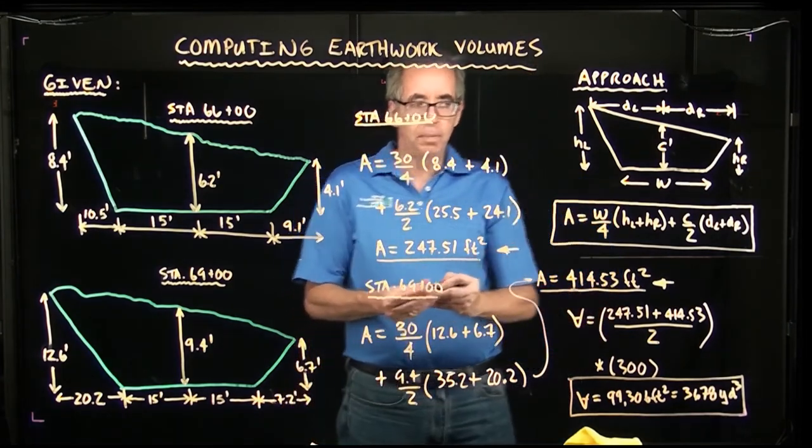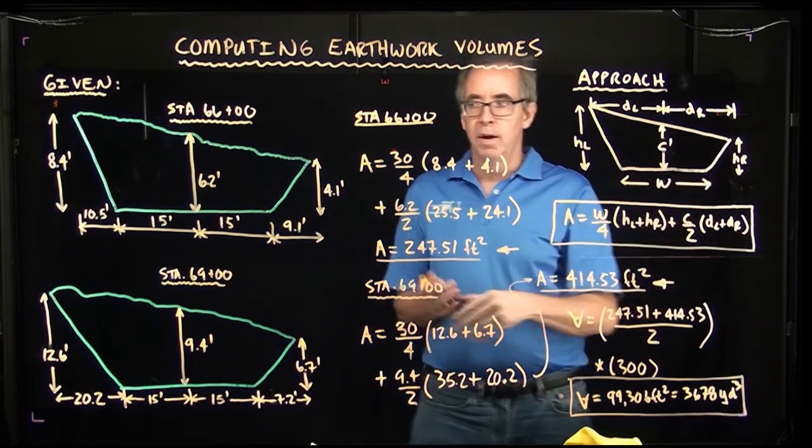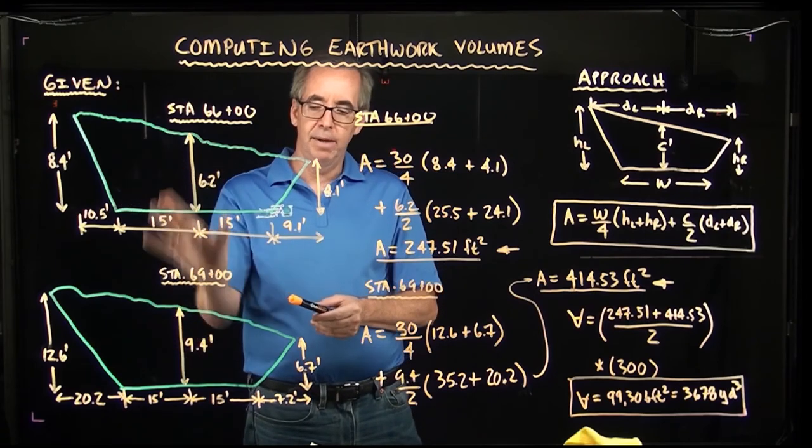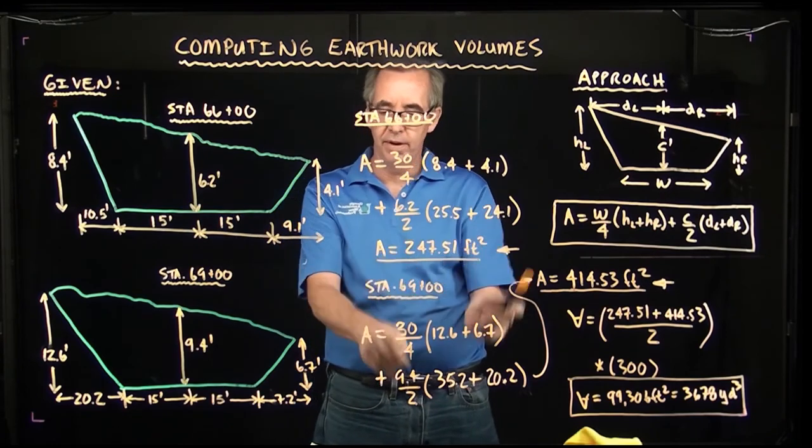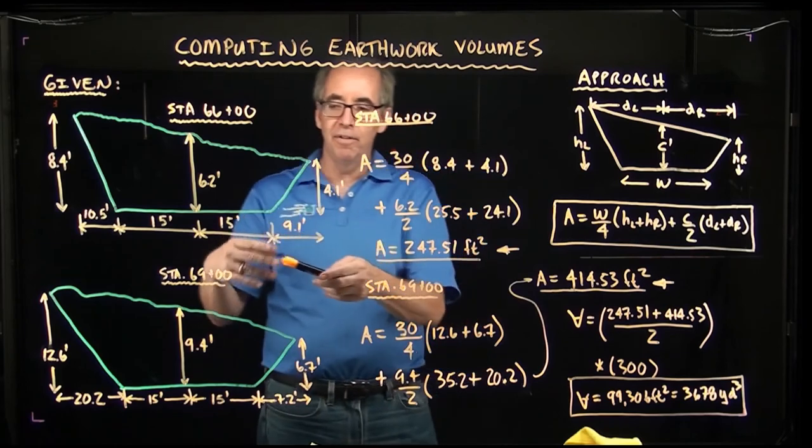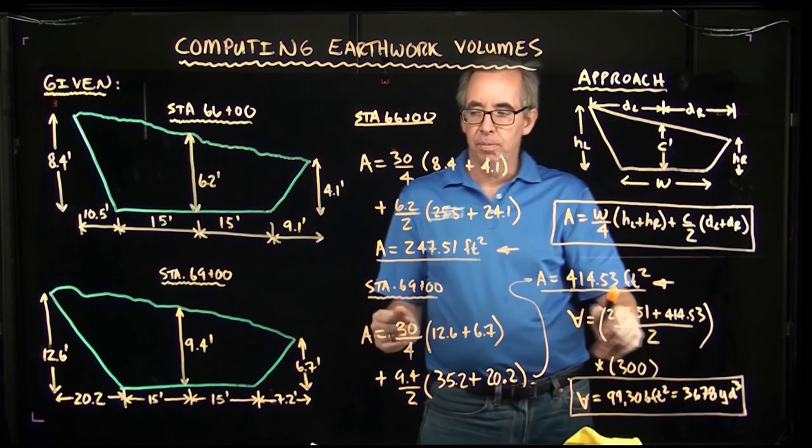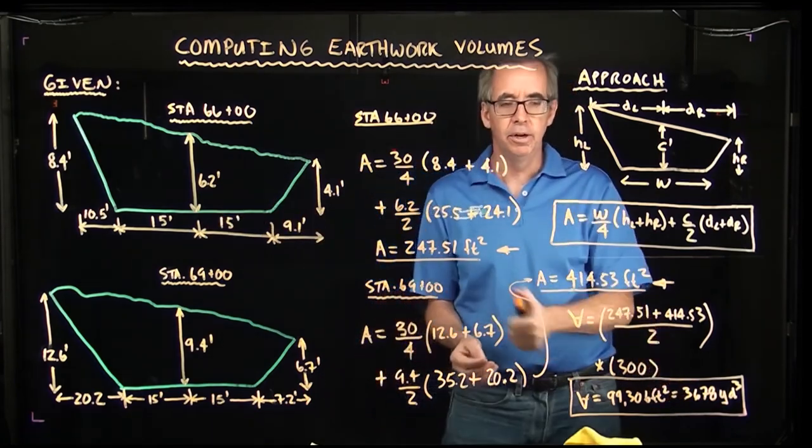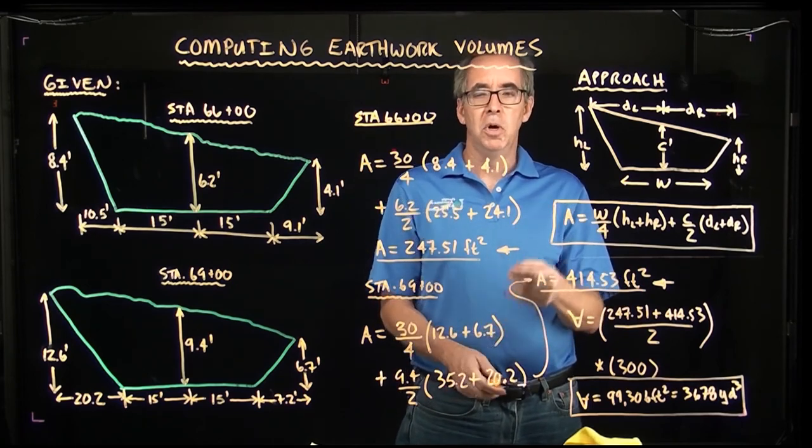essentially, we just applied this formula that we have in our textbook. It's a very standard formula for trapezoids, and we applied that for each cross section. In this particular case, we have cut on both sides. And we figured out that this cross sectional area had 247, and this cross sectional area here had 414, and then just using the average end-method routine, where we take the average of each cross section, and we multiplied it by the distance between them. We figured out that we had almost 3,700 cubic yards of dirt. And that concludes this example of calculation.